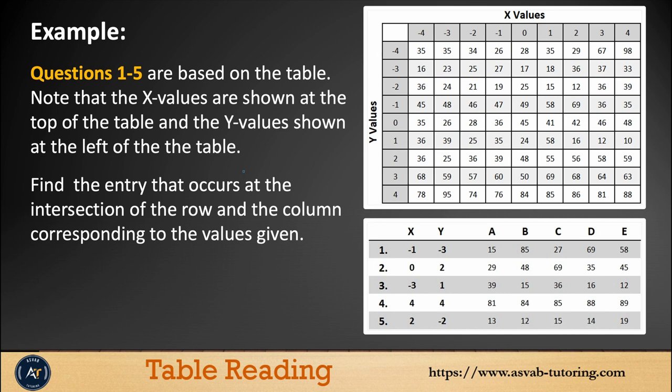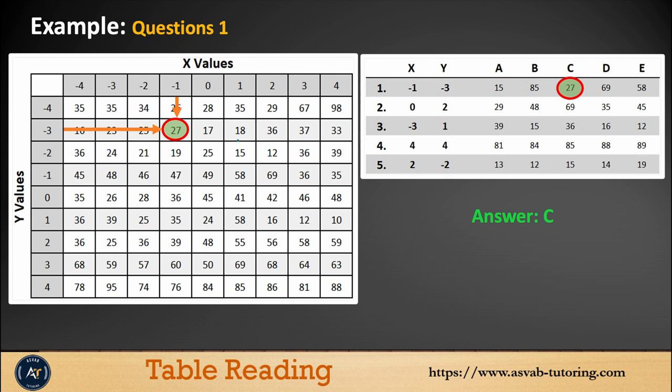Here's an example. You could see here the X axis has negative 4 to positive 4, Y axis same thing, negative 4 to positive 4, and you have five questions. Using this information, you have to quickly find the intersection of X and Y axis. For question 1, X axis is negative 1, Y is negative 3. First you go to X negative 1, then you go to Y negative 3, and that is the intersection. The correct answer is letter C.